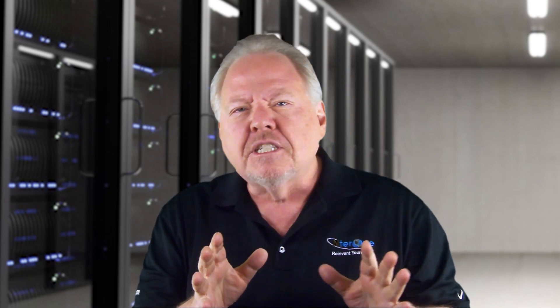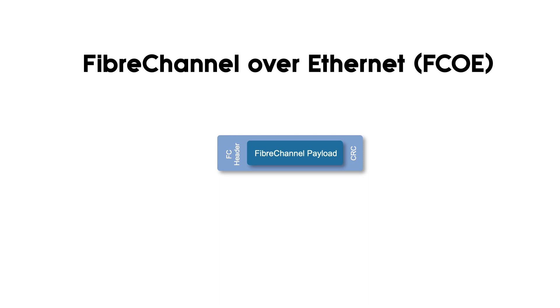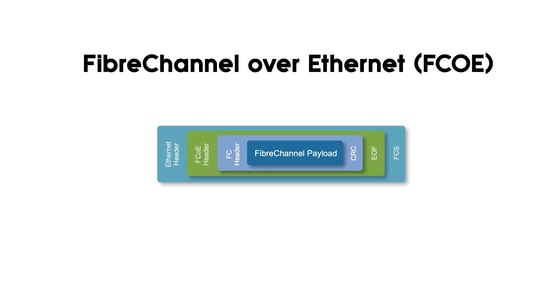NXOS actually evolved from the Cisco SAN OS, which was developed for the data center MDS fiber channel switches. As a result, NXOS supports something called Fiber Channel over Ethernet, or FCoE, which encapsulates a fiber channel frame inside of an Ethernet frame for transport across the Nexus series switches until it reaches a SAN fabric. For this to work, NXOS supports jumbo frames and provides a lossless QoS service for both native fiber channel and FCoE traffic.